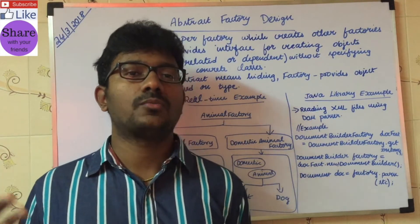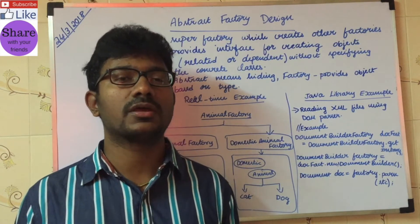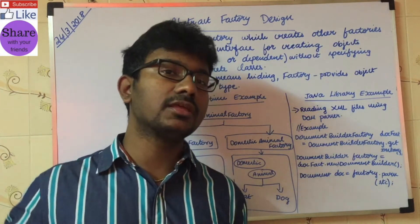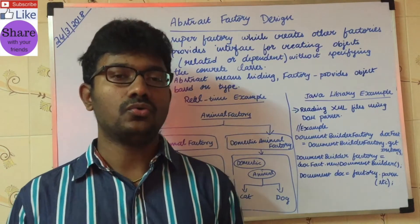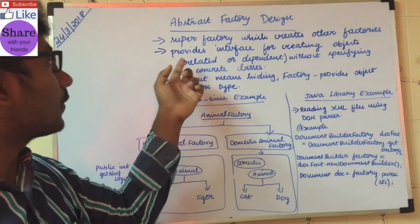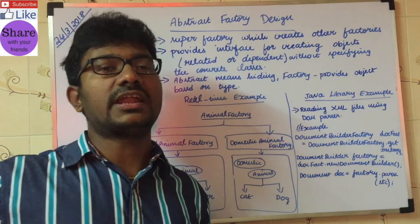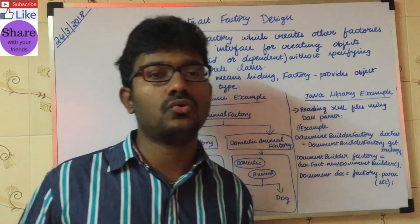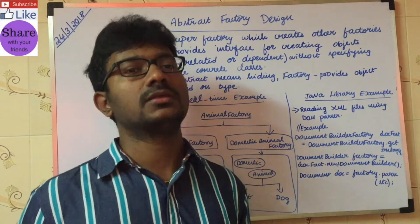If you go to a medical shop, you provide your age, gender, and so on. The shop gives you the best medicine for your type. This is like a factory — provide an interface for creating objects without specifying concrete classes. You find a factory, and an abstract factory manages multiple factories.